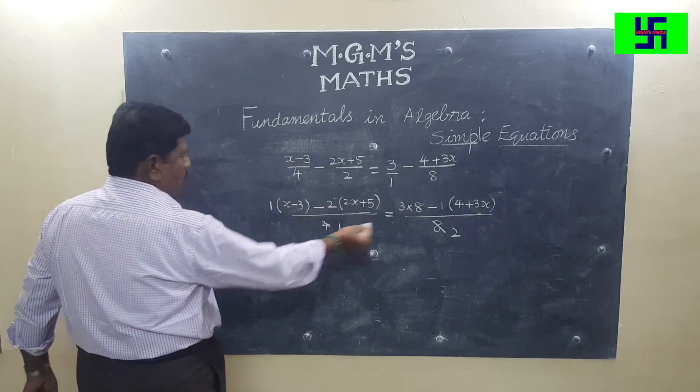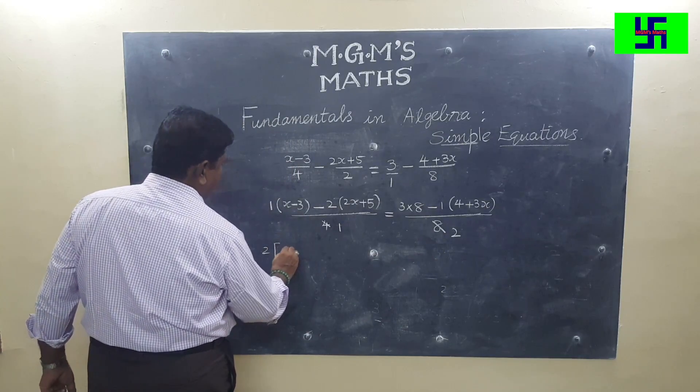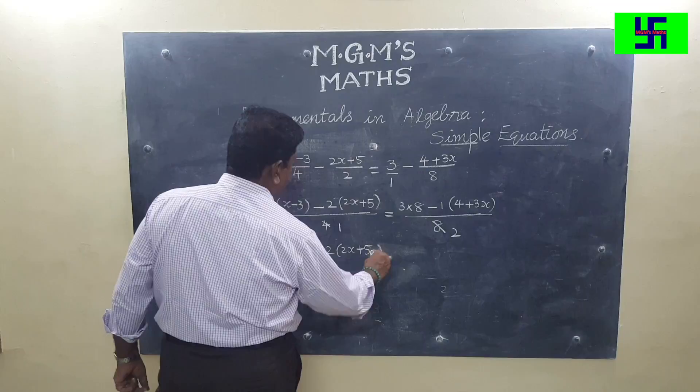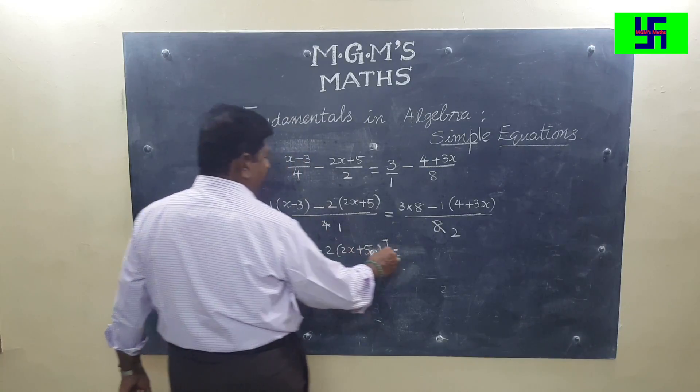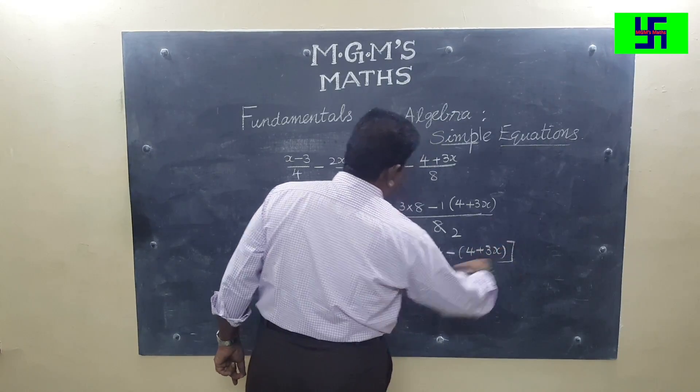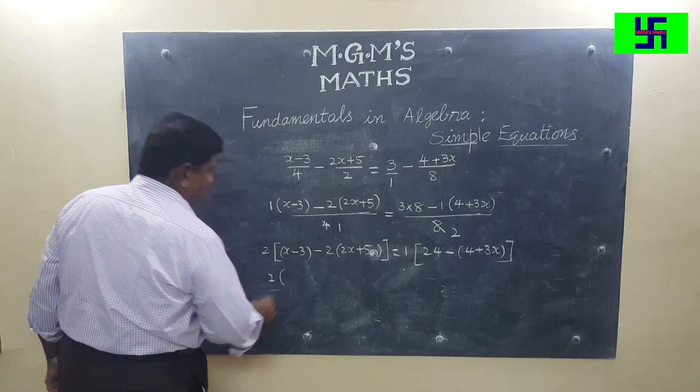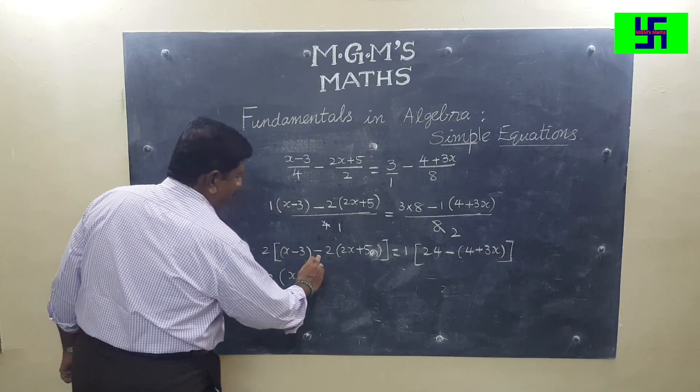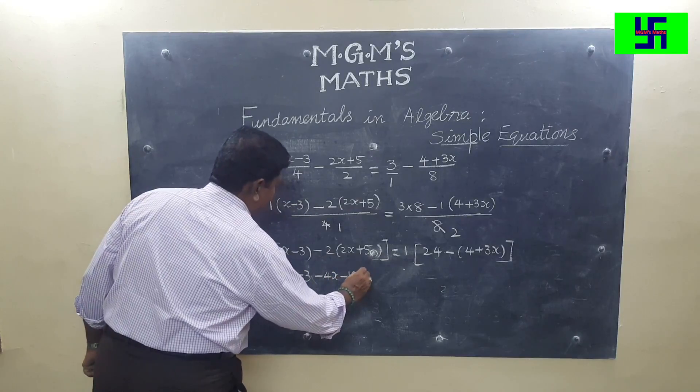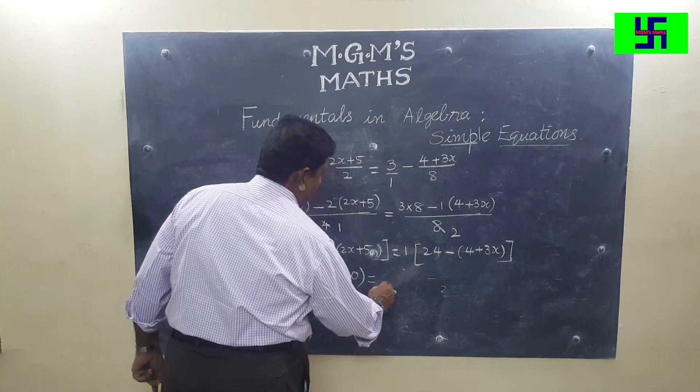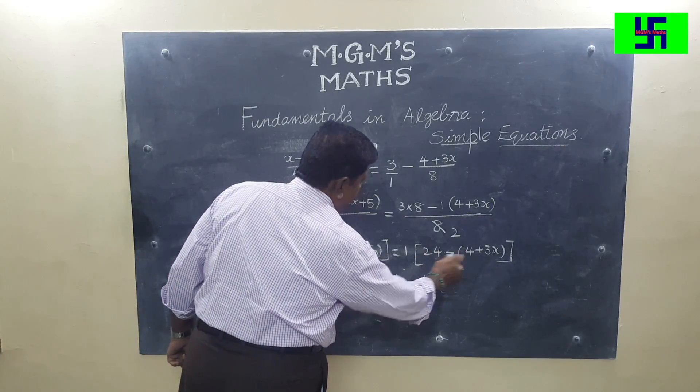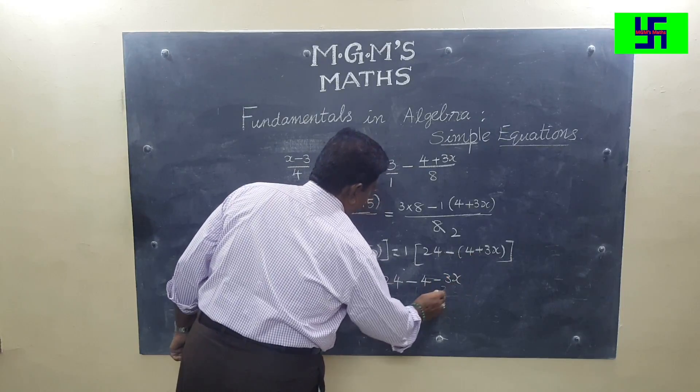You see, 2 times x minus 3 minus 2 into 2x plus 5. Close the bracket. Here 1 times, it is 24 minus 4 plus 3x. Keep the 2 as it is: x minus 3. Remove the bracket, simple bracket. Minus 2 into 2x is minus 4x minus 10. Close the bracket. Here 1 you can leave it: 24 minus 4, minus into plus is minus, so minus 3x.